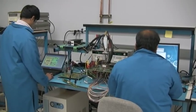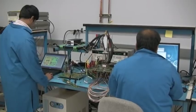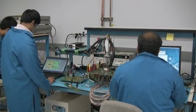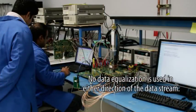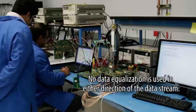Once the link is up and running we will inject a single bit error into the transmitter side and monitor the result on the receiver. We will then repeat the same process on the opposite link. No data equalization is used in either direction of the data stream.